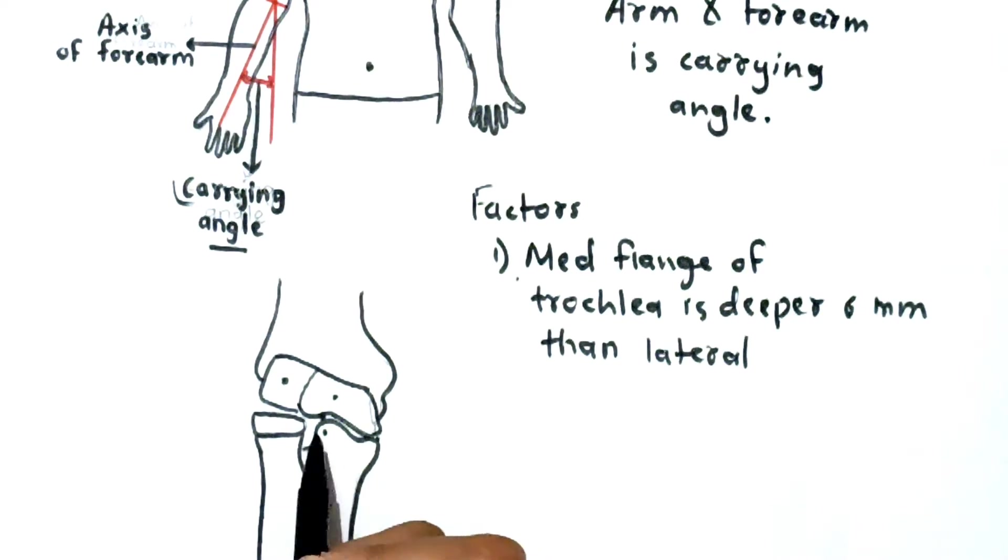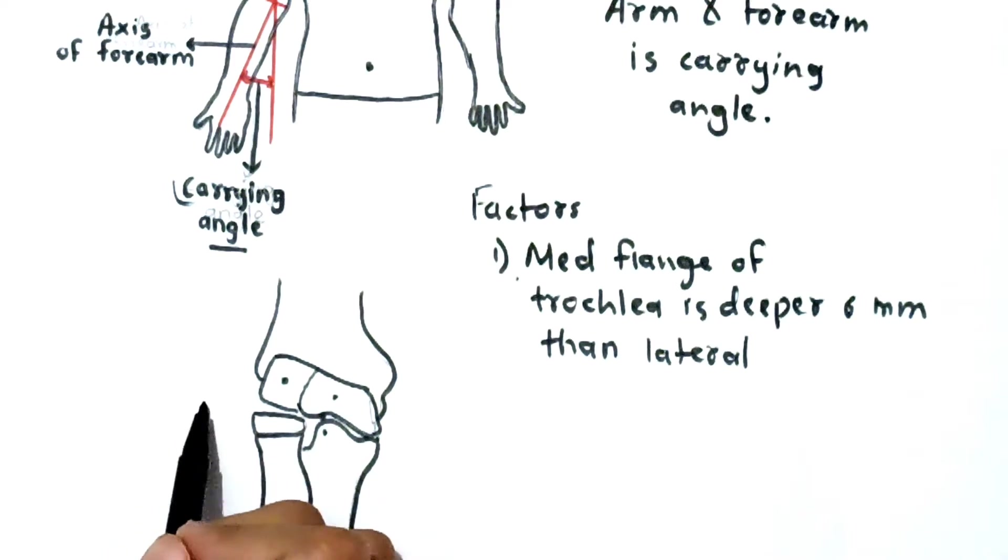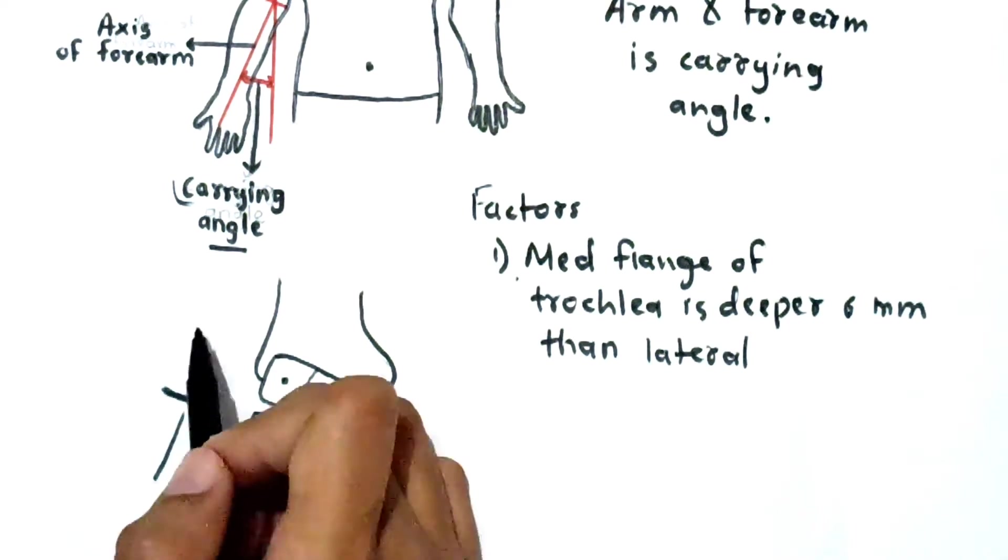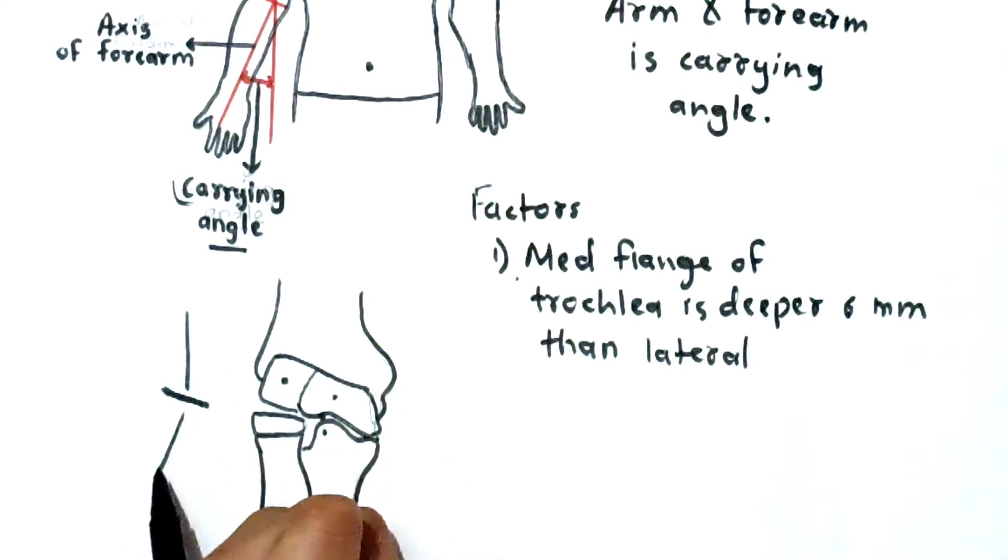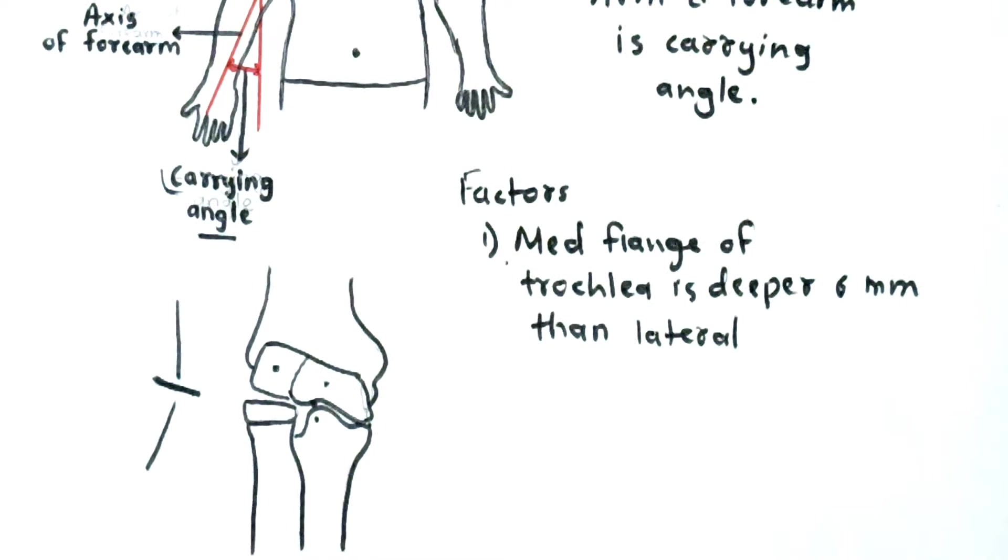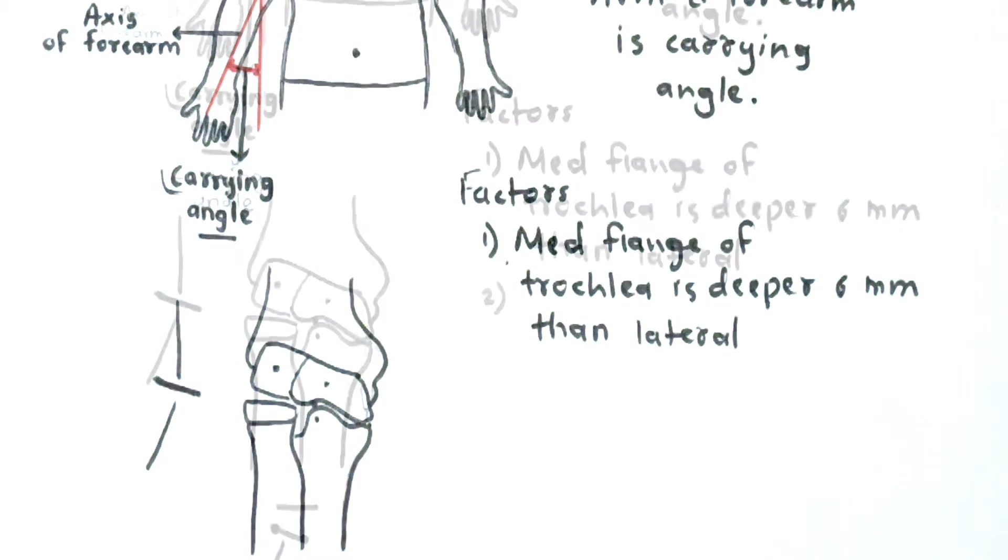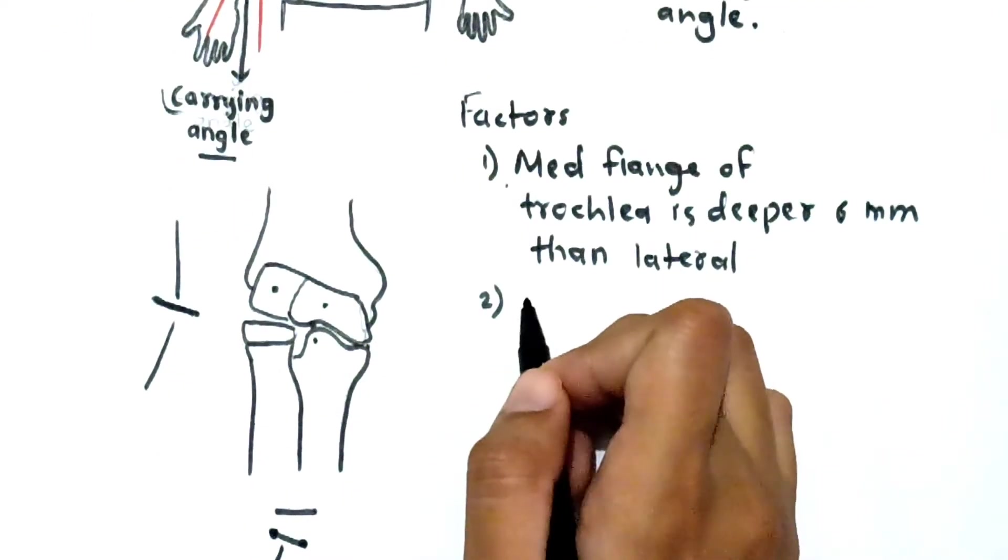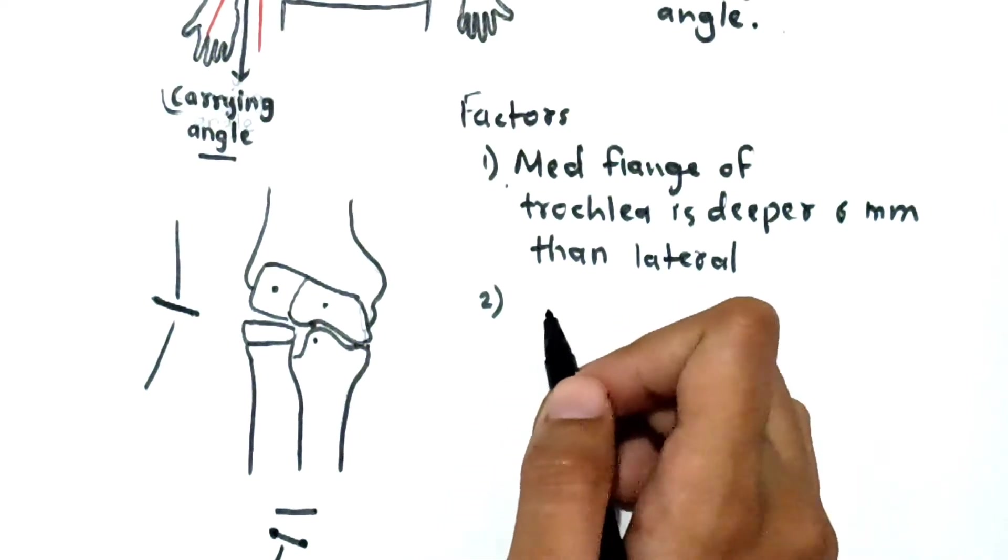So it is oblique. That's why your arm is like this and forearm is like this. Obviously if something is not straight, it is oblique, or a part is more deeper and a part is vertical, it is not in a straight line.